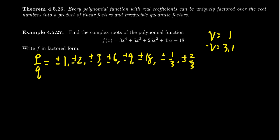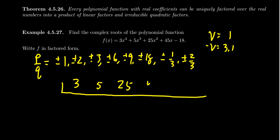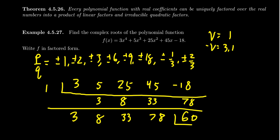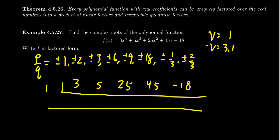Let's try x = 1. Writing the coefficients 3, 5, 25, 45, and −18: bring down the 3, then 3×1=3, +5=8, ×1=8, +25=33, ×1=33, +45=78, ×1=78, −18=60. Every number along the bottom was positive, which means we are too big — the upper bound theorem applies. So we can eliminate all positive candidates greater than one: 2, 3, 6, 9, and 18 are all ruled out.